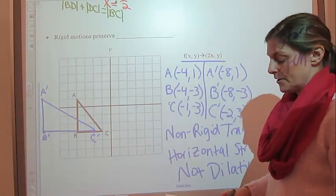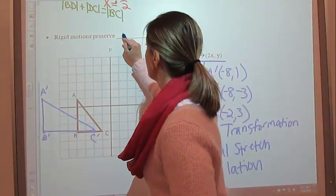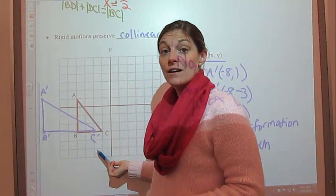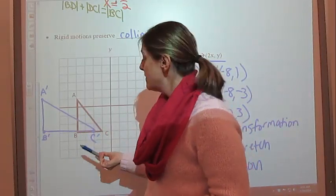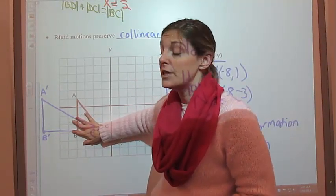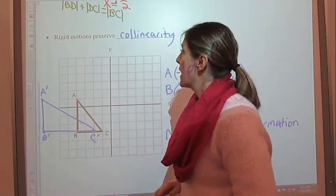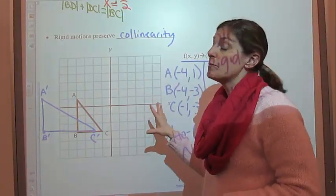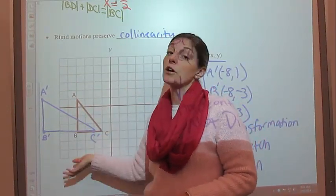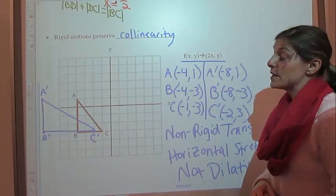And we'll talk more about dilations later. So the last property of rigid motions is that they preserve collinearity. Basically what that means is, if A and C are on the same line or collinear, then A prime and C prime are going to be on the same line — and that is preserved in rigid transformations. So rigid motions preserve collinearity — basically, if two points were on the same line segment in the original figure, they're going to be on the same line segment in the new figure. So those are the four properties of rigid motions.